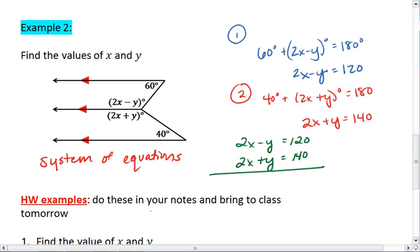If we add the equations, we get 4x, our negative y plus y cancels equals 260. 4x equals 260. Now we can solve for x. Divide both sides by 4 and we find that x equals 65. We'll write that up here for safe keeping.